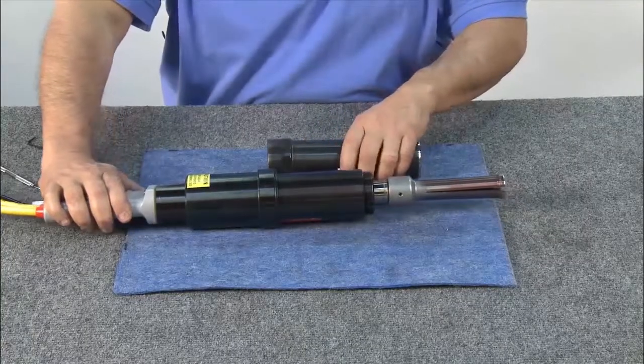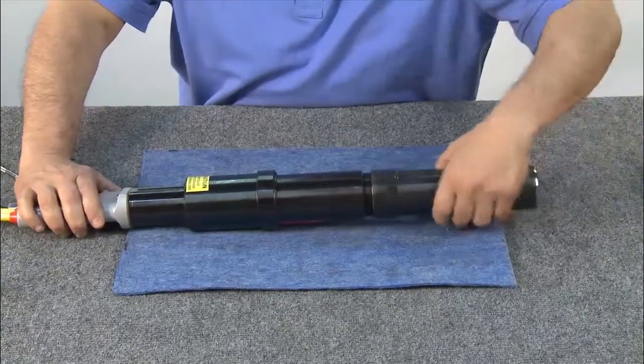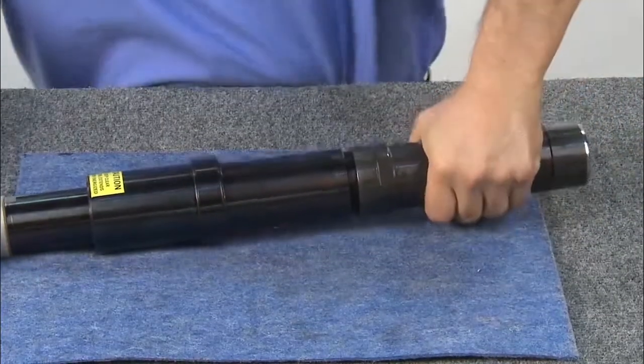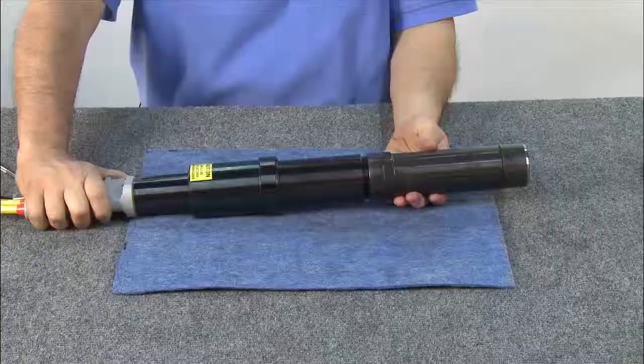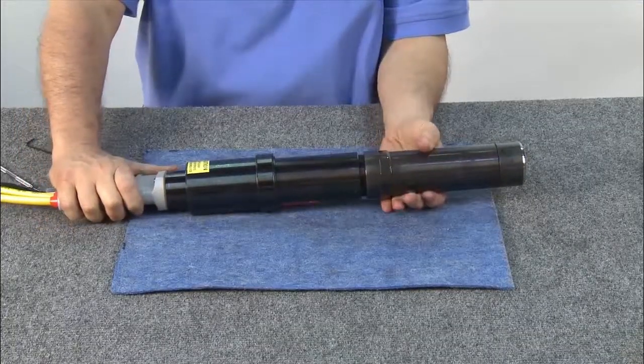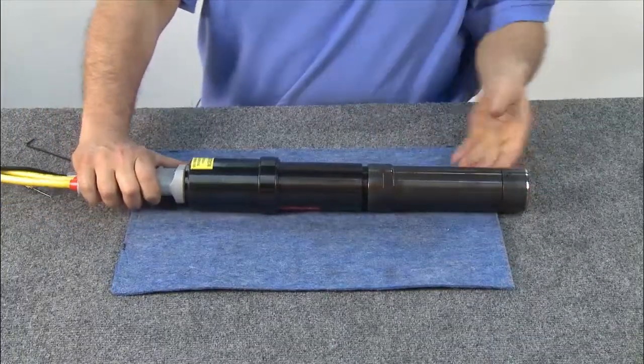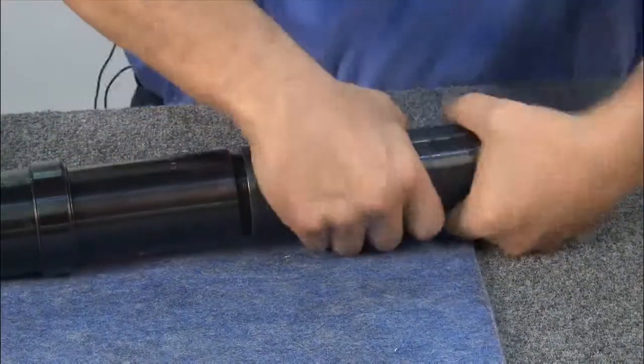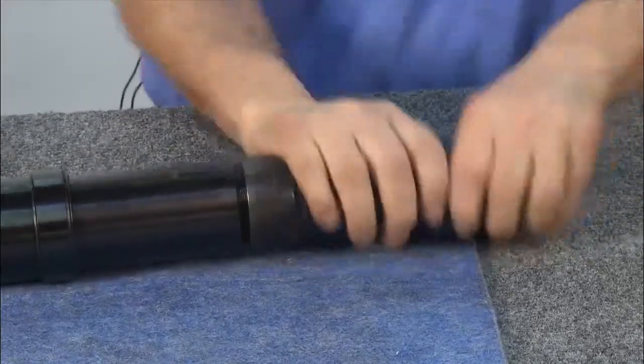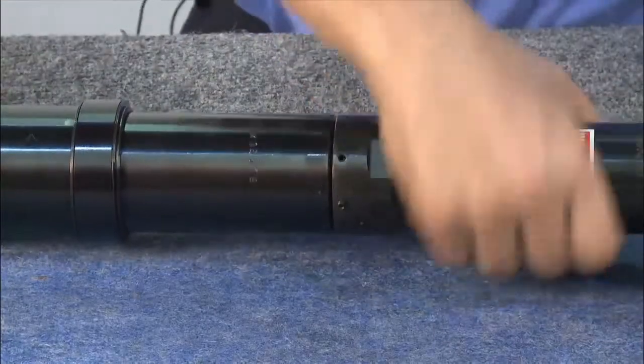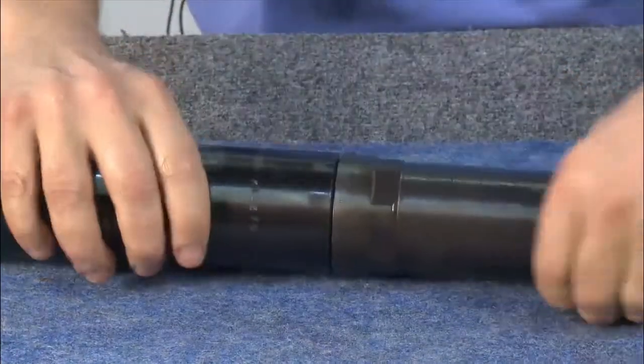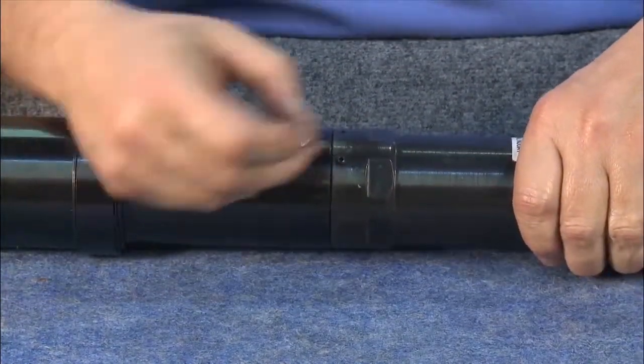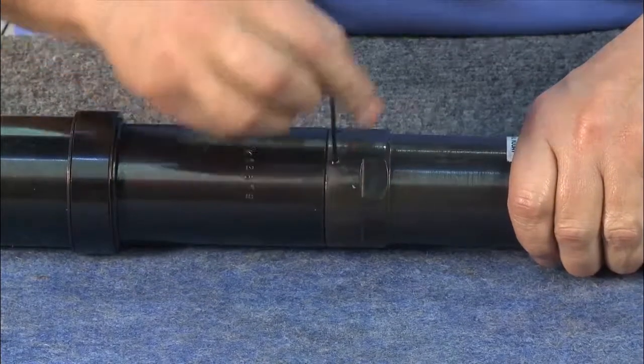Next, cycle the piston all the way back and thread on the anvil holder until it gets tight. Let go of the trigger. Notice that the puller is in the forward position and centered in the holder. Continue to thread the anvil holder down until it bottoms. Once the holder is bottomed, install the lock screw.